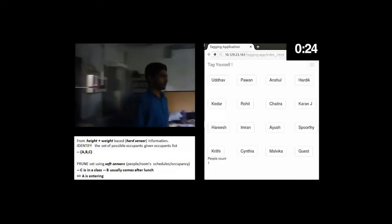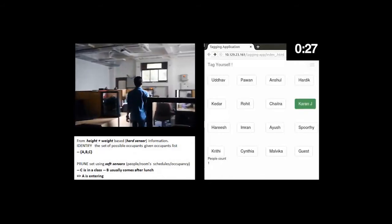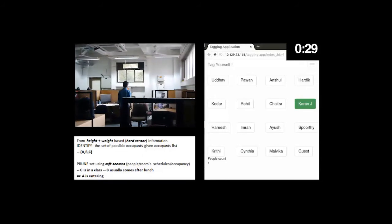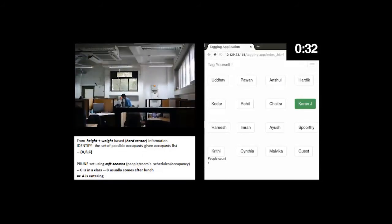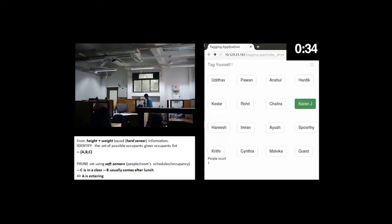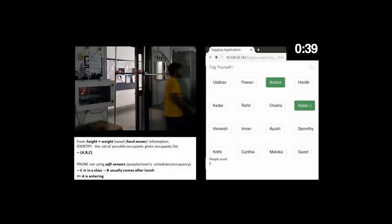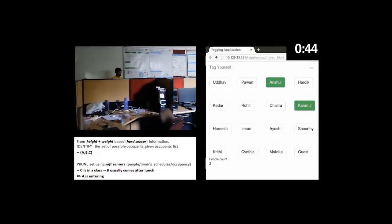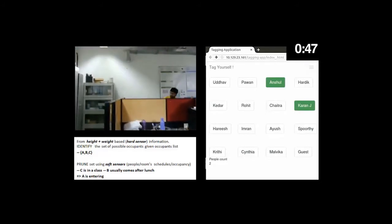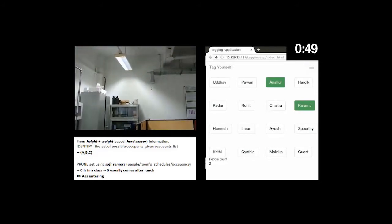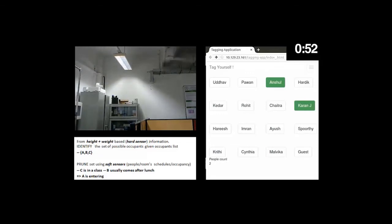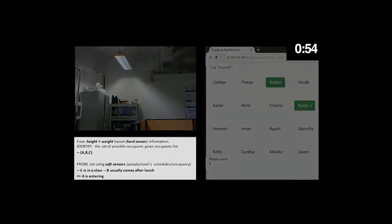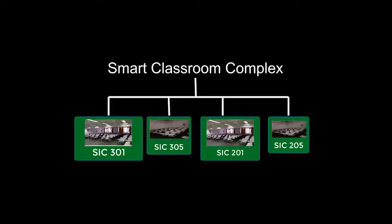Soft information like user's schedules and current occupants in the room is used to disambiguate between people having similar height and weight. Each occupant has his own set of preferred appliances, which are switched on when he's in the room and turned off when he leaves the room. This helps conserve enormous amounts of energy while giving the occupants a personalized experience.